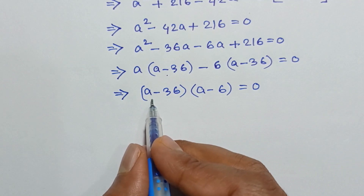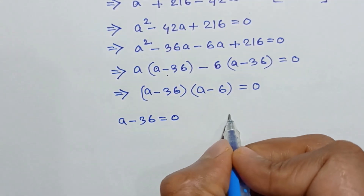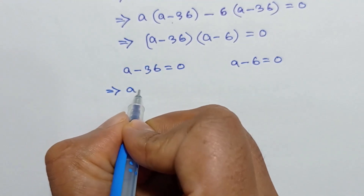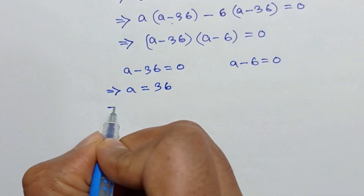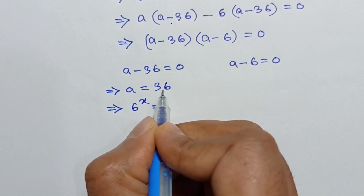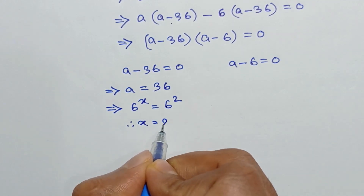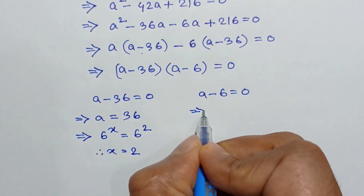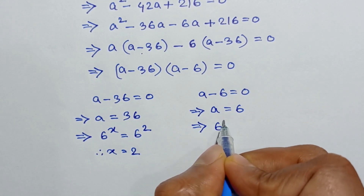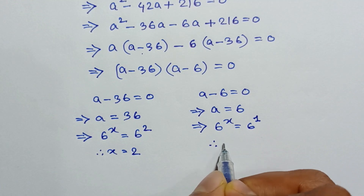So a minus 36 is equal to 0 or a minus 6 is equal to 0, giving us a is equal to 36 or a is equal to 6. Since a is equal to 6 to the power x, we have 6 to the power x is equal to 36 which is 6 squared, so x is equal to 2. Or 6 to the power x is equal to 6 to the power 1, so x is equal to 1.